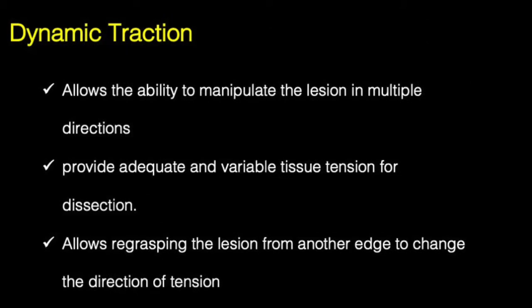Although all the above examples provide significant traction, they are not providing what we call dynamic traction. Dynamic traction allows the ability to manipulate the lesion in multiple directions — for example, moving it to the right, to the left, or in various orientations. It also provides adequate and variable tissue tension for dissection. Sometimes you want the tension to be higher or lower. It also allows re-grasping of the lesion from another edge to change the direction of the tension.